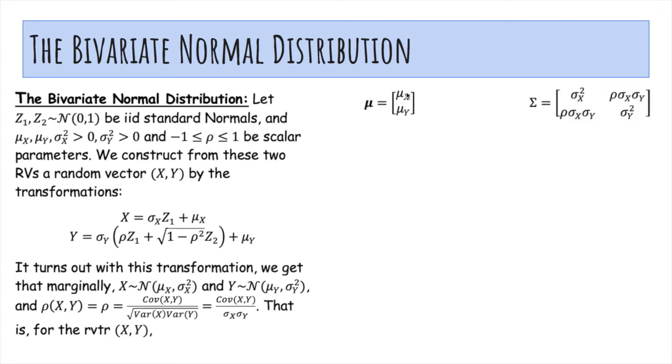So that is, the mean vector is mu x mu y, the covariance matrix has sigma squared x and sigma squared y on the diagonal, and the covariance is, we just multiply all sides here by sigma x sigma y, and so we get rho sigma x sigma y.